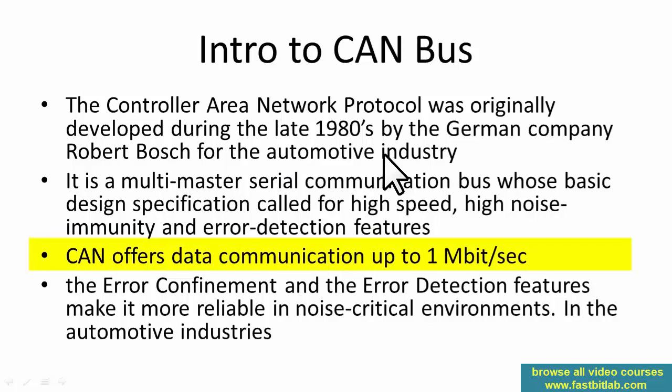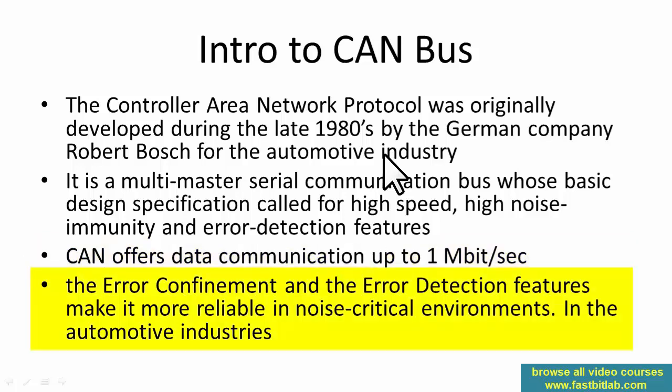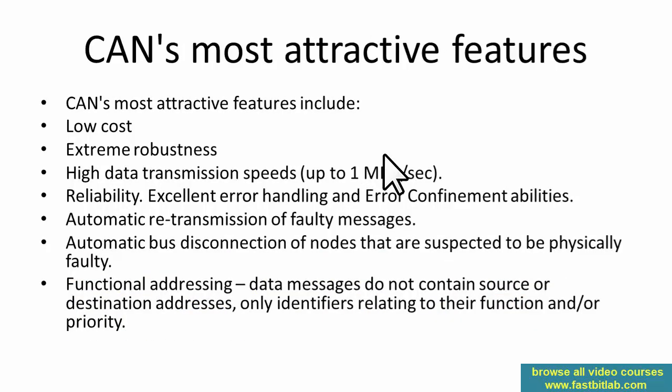CAN offers data communication up to one megabit per second in the high speed CAN, which is what we will be using. The error confinement and error detection features of this protocol make it more reliable in noise-critical environments such as the automotive industry. These are the major highlights of this protocol, making it very suitable for noisy and dynamic environments like an automobile. In the next lecture, we'll understand some of CAN's most attractive features.